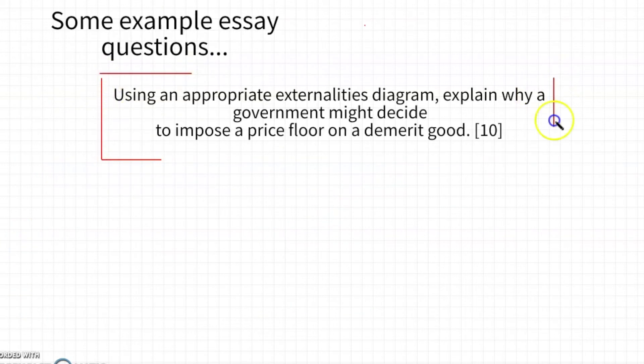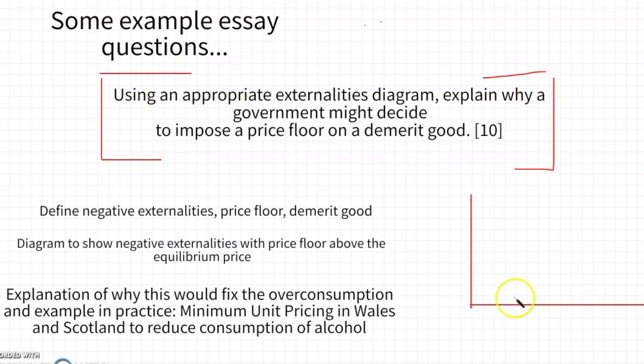So how do we apply this to an essay question? For a 10 mark paper one, if we got the question, using an appropriate externalities diagram, explain why government might decide to impose a price floor on a demerit good. I put this here because conveniently price floor is the only solution that we haven't mentioned in terms of negative externalities of consumption. As you probably remember, price floor is a price control where you set a minimum price below which a producer cannot legally sell at. So you're increasing the price of these demerit goods, alcohol or cigarettes, for example.